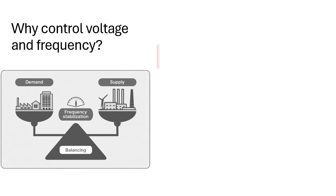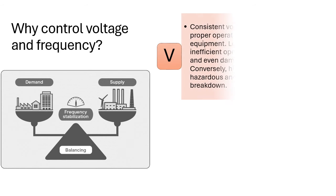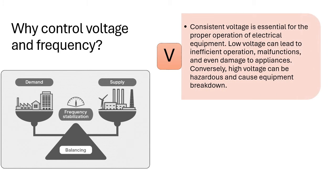Why control voltage and frequency? Voltage: consistent voltage is essential for the proper operation of electrical equipment. Low voltage can lead to inefficient operation, malfunctions, and even damage to appliances. Conversely, high voltage can be hazardous and cause equipment breakdown.